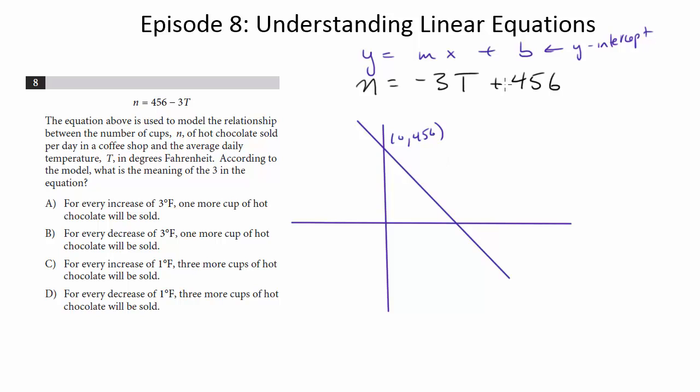So notice in this case we're not asked what the 456 means. But the 456 is kind of the maximum value of whatever the y is in this case. And the y is n. It's the number of hot chocolate sold. So really, it's like the number of maximum cups of coffee sold in this scenario, assuming t can't be smaller than 0.